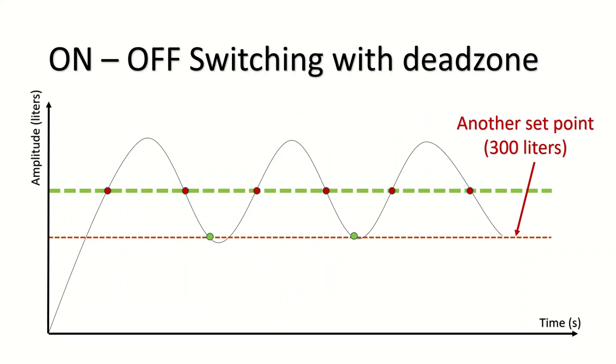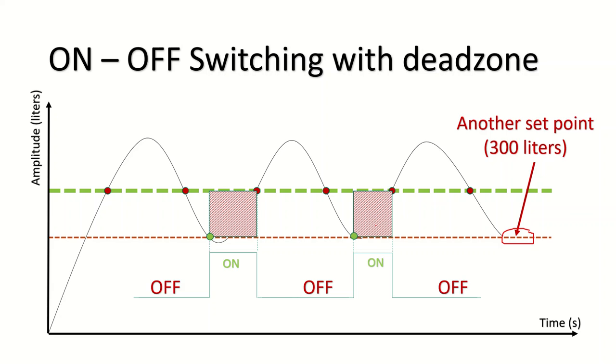What if we set another set point at 300 liters? This is what we call the new set point. It means we want the pump to work at this new set point.